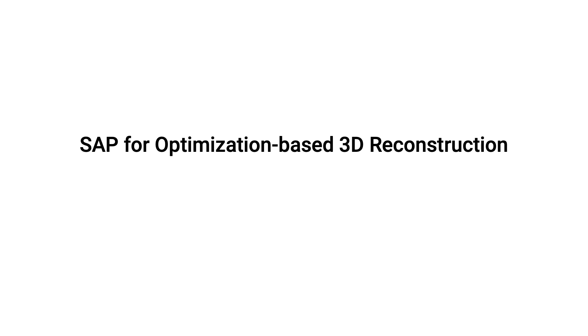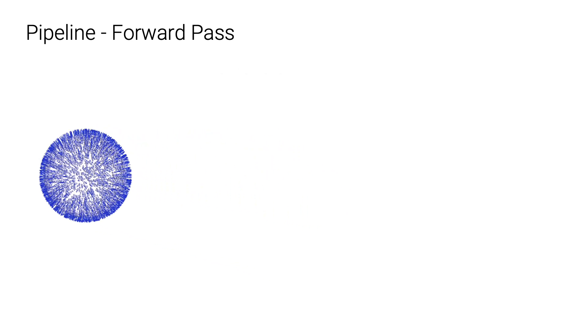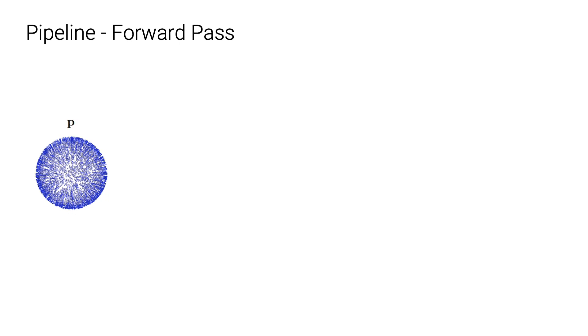Let's first see how we apply SAP in optimization-based surface reconstruction. We initialize the point clouds from a sphere. We can then pass this initial point cloud into our differentiable Poisson solver, DPSR, and obtain a dense indicator grid.